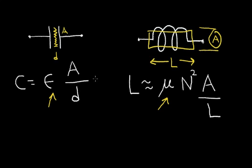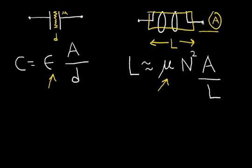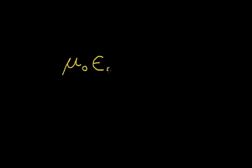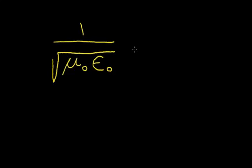One thing that's very interesting to me is that the properties epsilon and mu are very fundamental to nature. If we take mu of free space — mu sub zero — multiply it by epsilon of free space — epsilon sub zero — take the square root and divide that into one, when we calculate the value it turns out that this equals the speed of light, which I'll call C prime so we don't confuse it with C for capacitance.